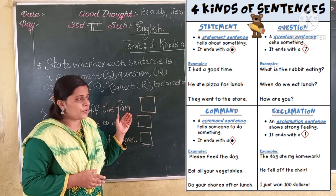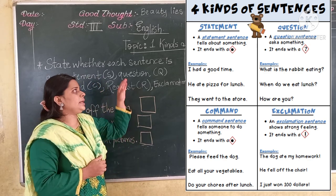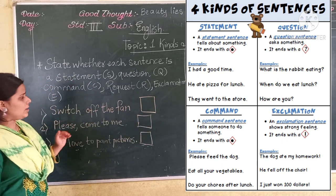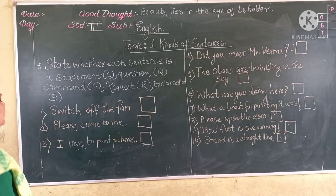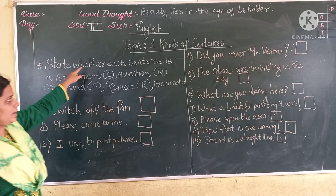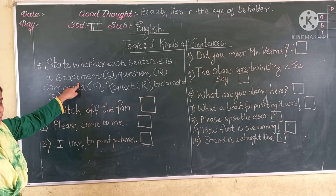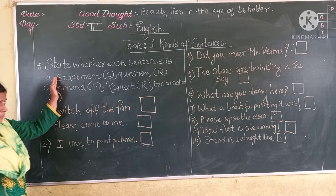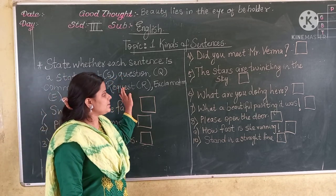So these are all four topics we discussed in the last video. Now let's start doing the exercise given on the blackboard. I will read the question. The instruction says: state whether each sentence is a statement, question, command, request, or exclamation.